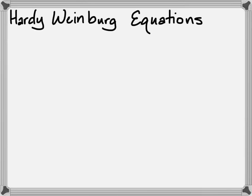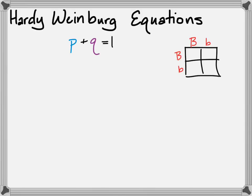There are a couple of equations involved in finding Hardy-Weinberg equilibrium. The first one is going to be familiar — we've already gone over it. If we rename the two different alleles, the dominant and recessive alleles, P and Q, then you should know that P plus Q equals 1, because the sum of all the alleles in the population should add up to 100%.